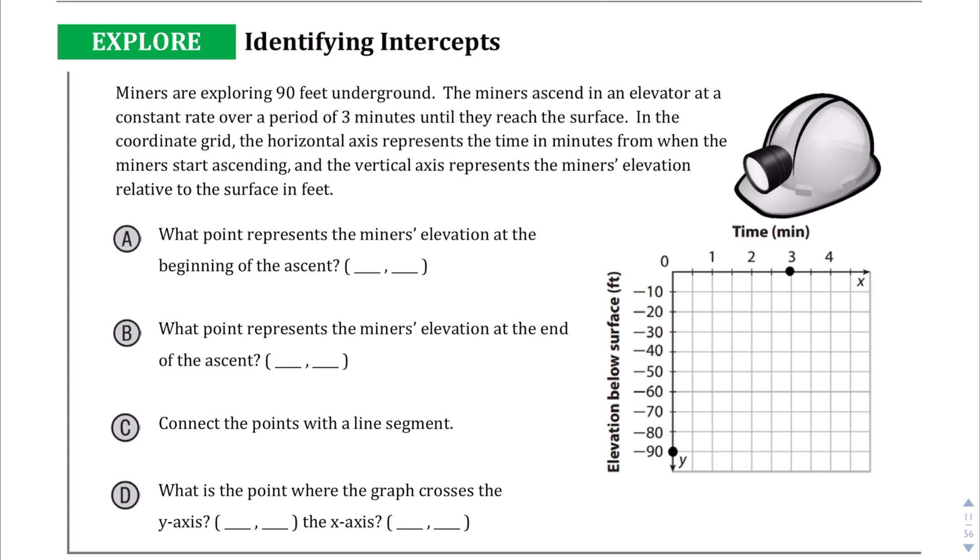They're going up at a constant rate over a period of 3 minutes until they reach the surface. In the coordinate grid, the horizontal axis represents the time in minutes from when the miners start ascending and the vertical axis. So let's explain that. The horizontal axis: 0, 1, 2, 3, and 4 are the time in minutes that is passing by.